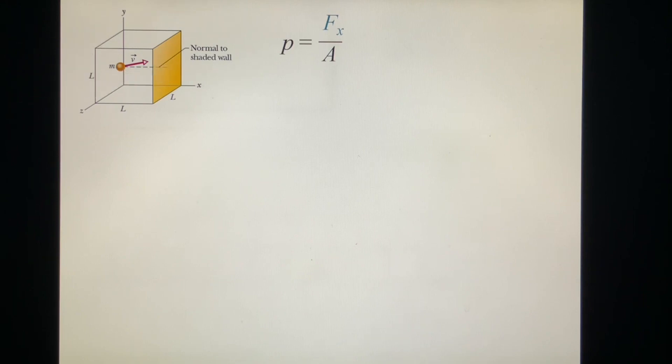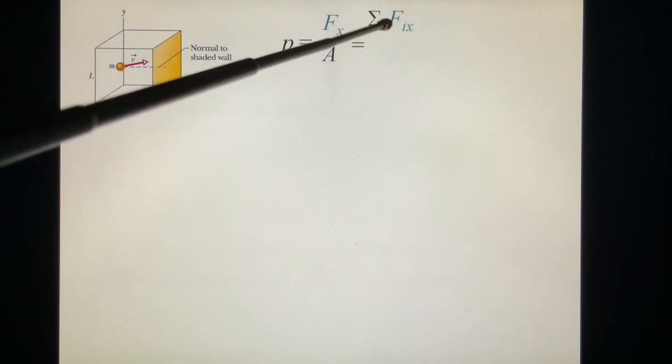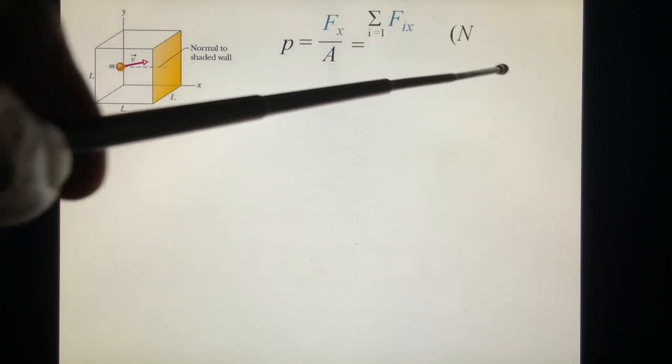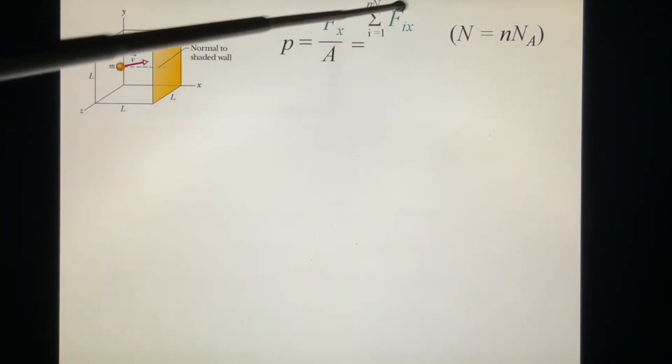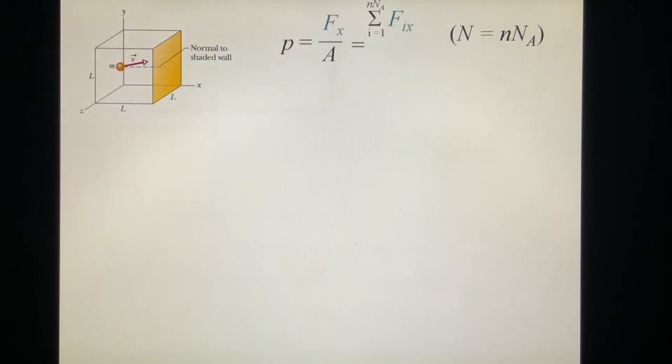Look at Fx. All together, we have molecules 1, 2, 3, 4, and so on. There's a total number, N A, Avogadro's number, the total number in this box. So we sum all the forces 1, 2, 3, 4 together, that's the total force. The area is L squared. Now we start with Fx for a single molecule. Where does the force come from? The hit. When it hits, it is a collision. We call it an elastic collision.